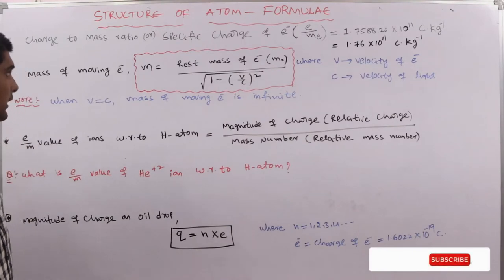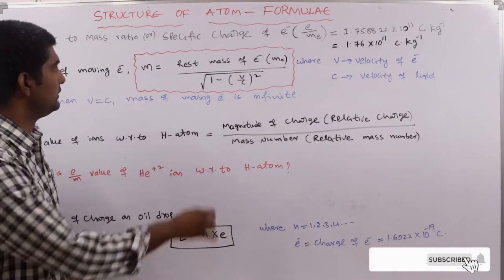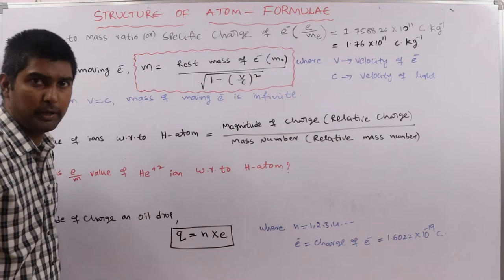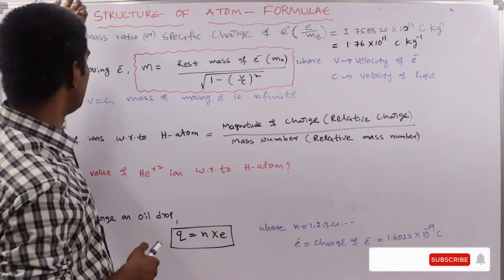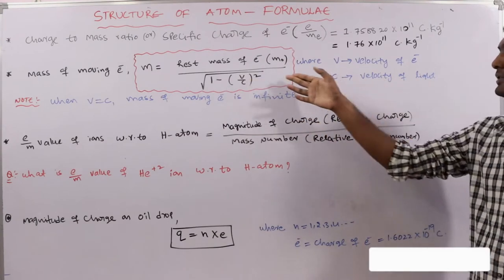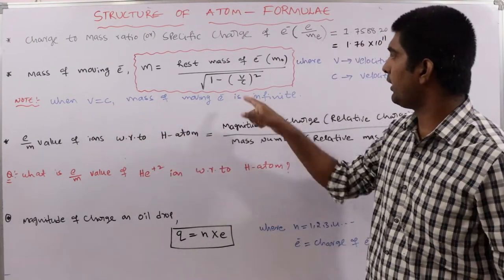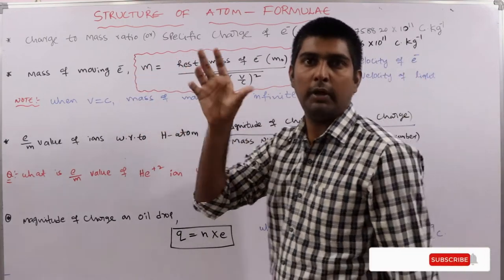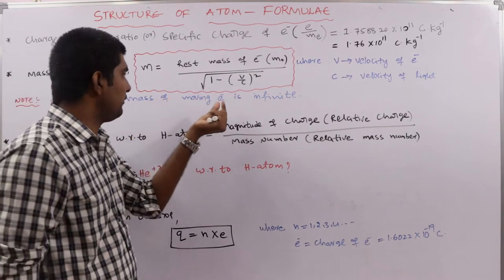The mass of a moving electron is given by m = m₀ / √(1 − v²/c²), where m₀ is the rest mass, v is the velocity of the electron, and c is the velocity of light. When v equals c, the denominator becomes zero, so the mass of the moving electron becomes infinite.